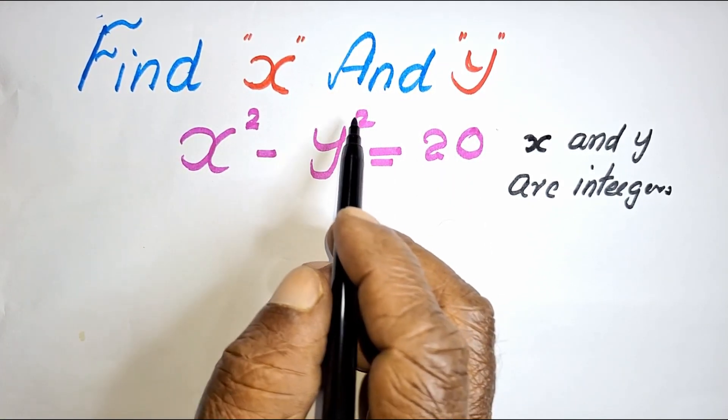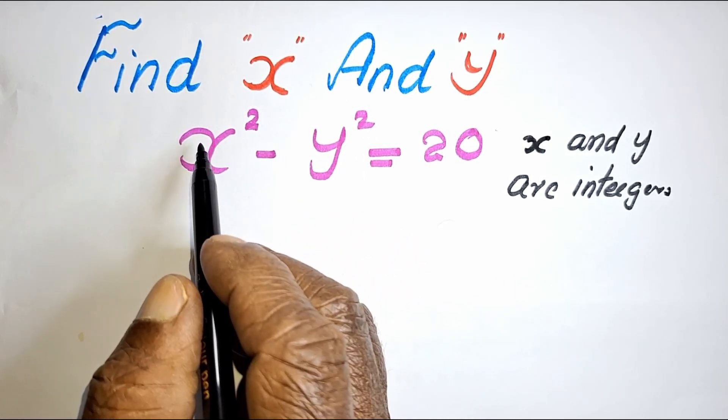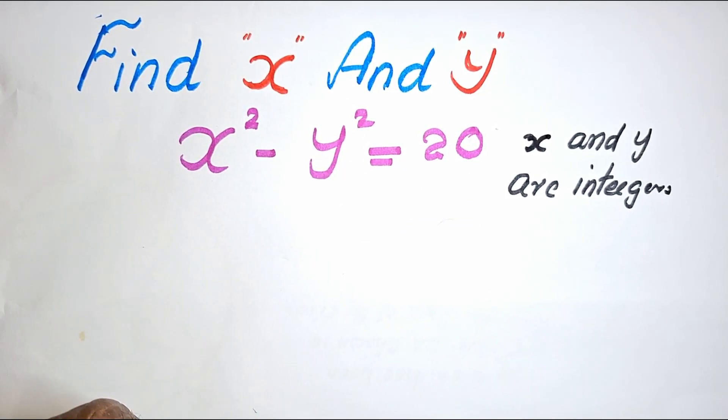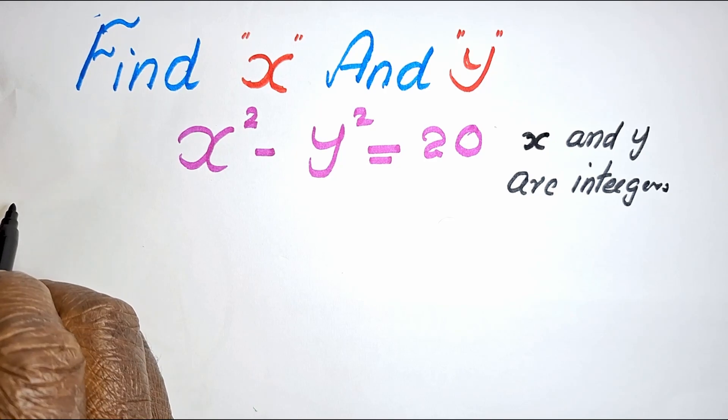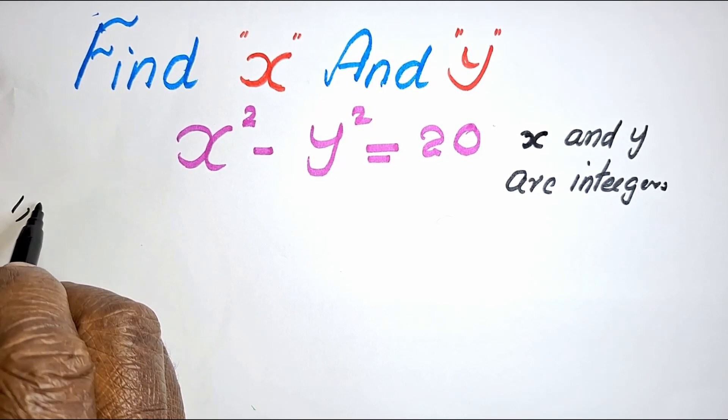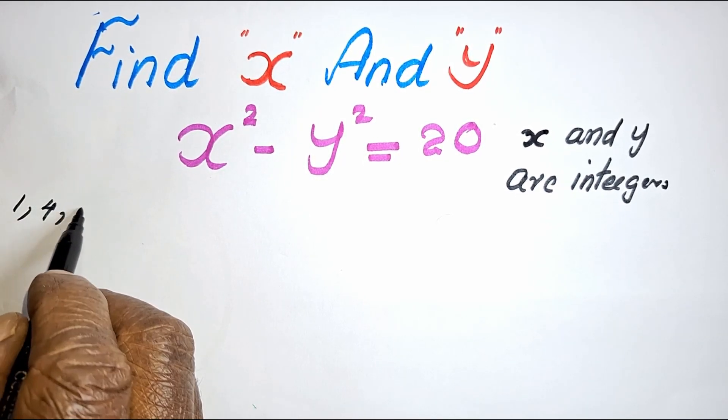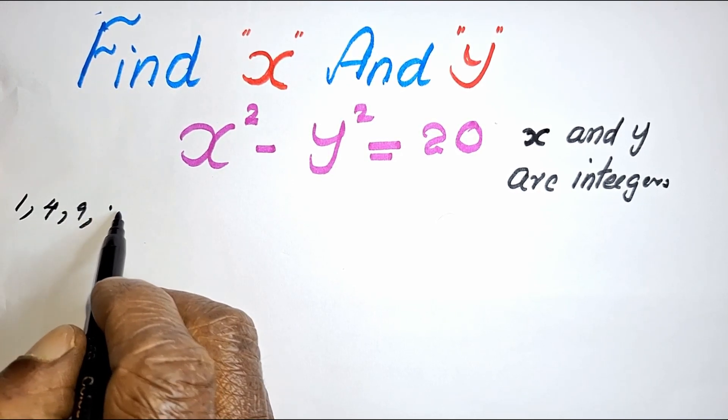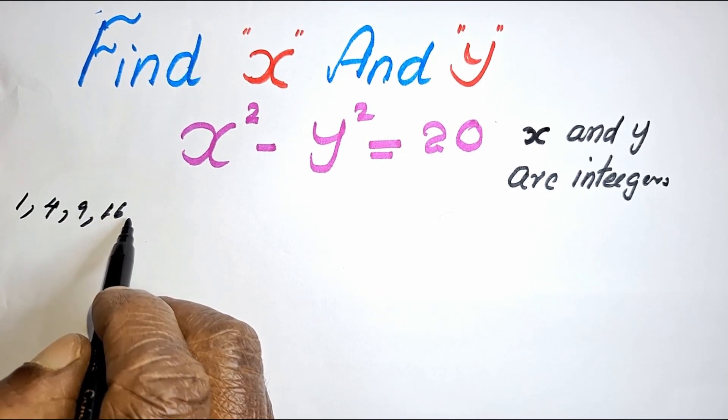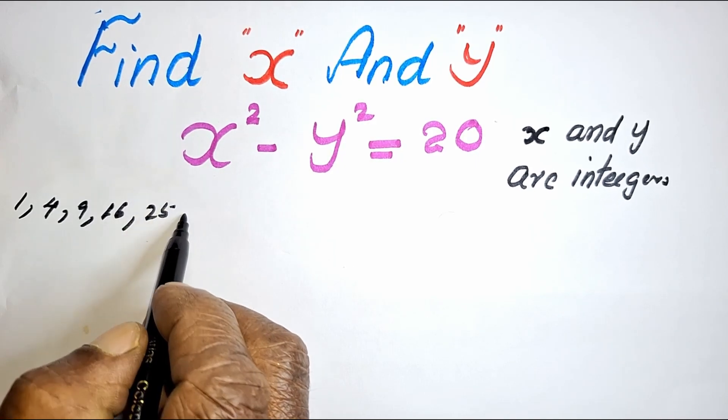Now we will have to find what are the two square numbers which has a difference of 20. What are the square numbers? We know the square numbers is 1, 4, 9, 16, and 25, and so on.